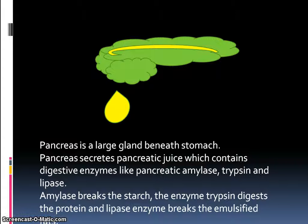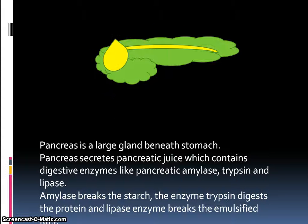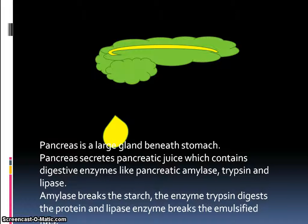The pancreas is a large gland located beneath the stomach. It secretes pancreatic juice, which contains digestive enzymes including pancreatic amylase, trypsin, and lipase. Amylase breaks down starch, trypsin digests proteins, and lipase breaks down emulsified fats.